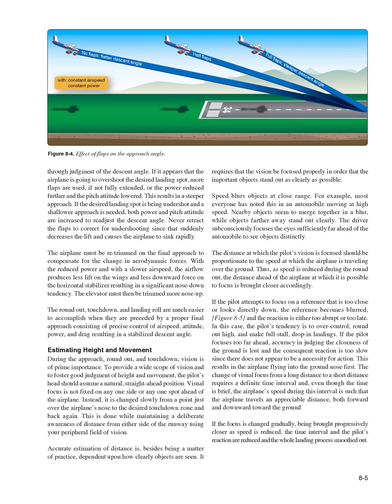Speed blurs objects at close range—nearby objects seem to merge together in a blur, while objects farther away stand out clearly. The driver of an automobile subconsciously focuses sufficiently far ahead to see objects distinctly. The distance at which the pilot's vision is focused should be proportionate to the speed at which the airplane is traveling over the ground. As speed is reduced during the roundout, the distance ahead at which it is possible to focus is brought closer accordingly. If the pilot attempts to focus on a reference too close or looks directly down, the reference becomes blurred and reaction is either too abrupt or too late.